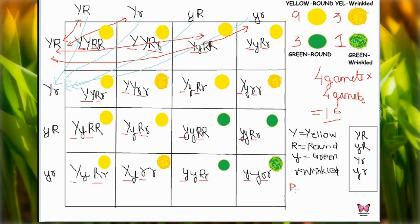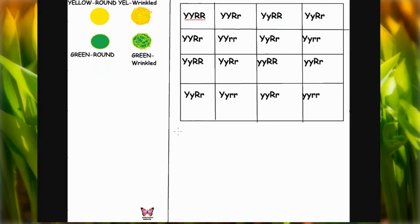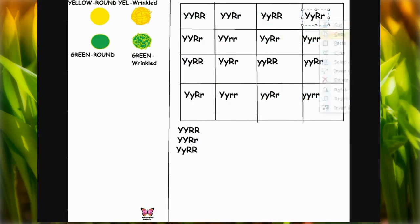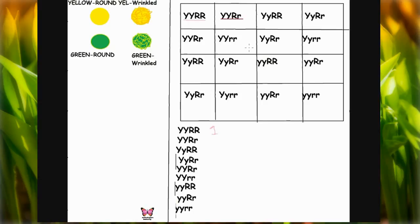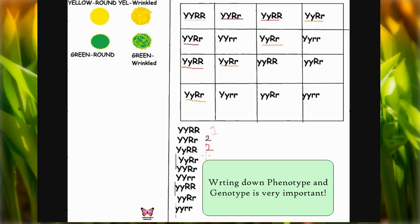Phenotypically we get a ratio of 9:3:3:1 if we count how many yellow round, yellow wrinkled, green round, and green wrinkled offspring are produced. I am also writing out only the unique genotypes among the progeny to count the genotypic ratio. For example, YYRR occurs once, YY capital R small r occurs twice, capital Y small y RR occurs twice, and so on.